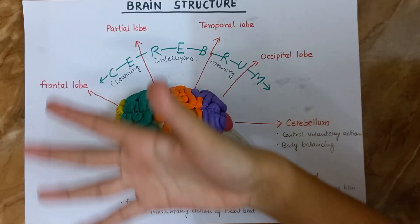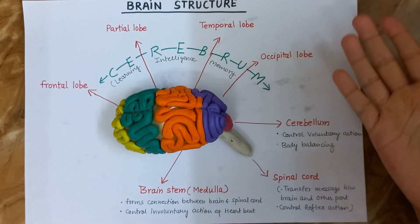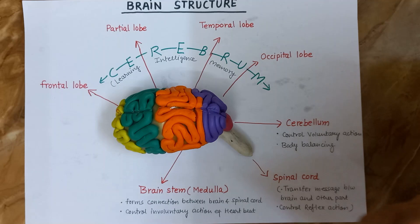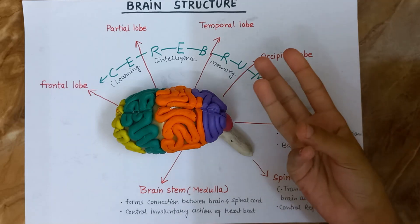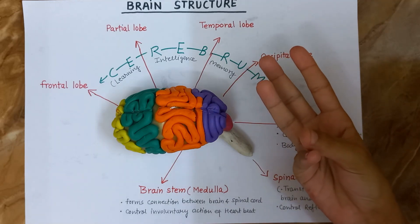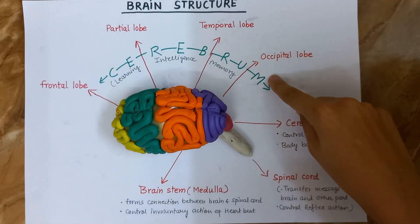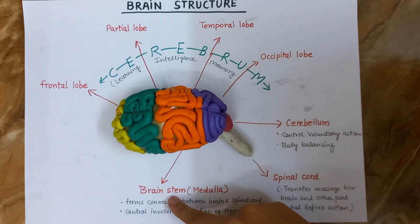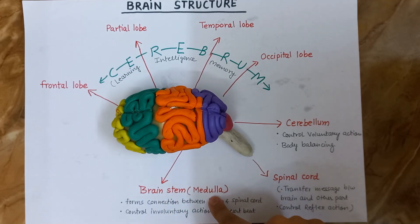So friends, our brain structure model is ready. There are three main parts of the brain: cerebrum, cerebellum, and brainstem, which is also known as medulla.